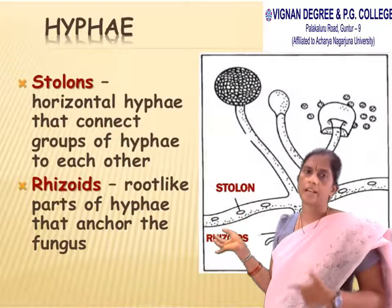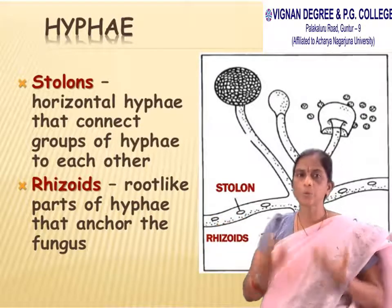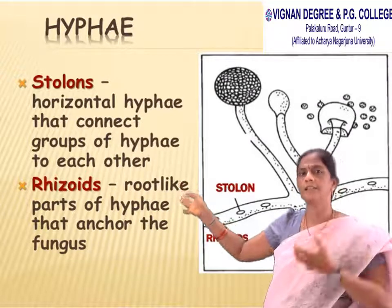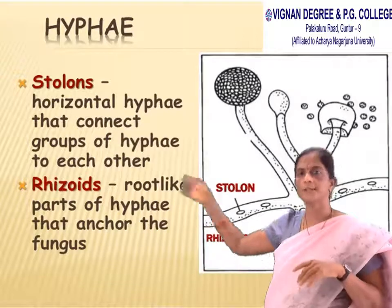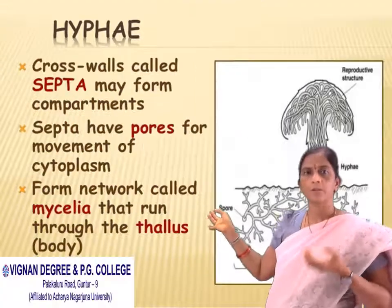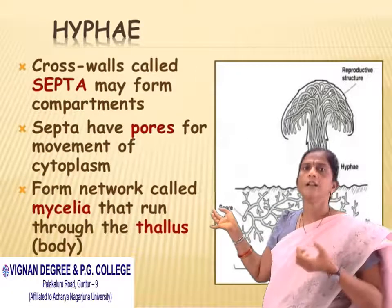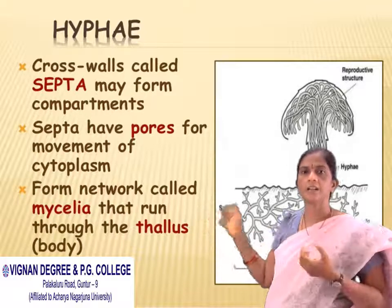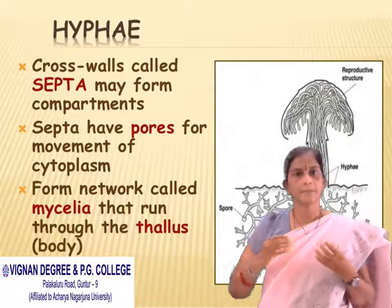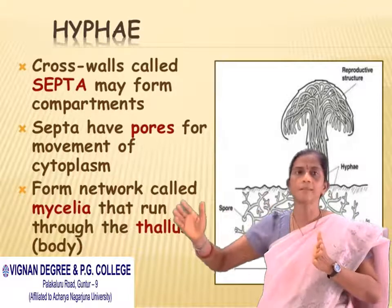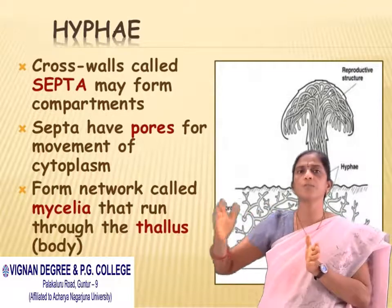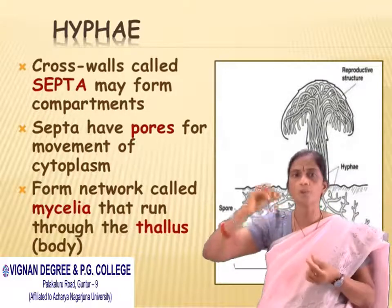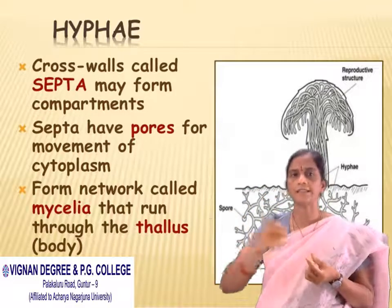Coming to rhizoids — rhizoids are the root-like parts of the hyphae that anchor and support the fungi. Coming to septa — the crosswalls are called septa. Septa may be in the form of compartments, dividing the cell into small compartments. Septa have pores for the movement of cytoplasm.